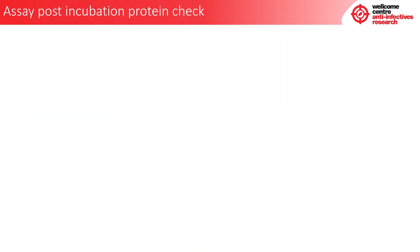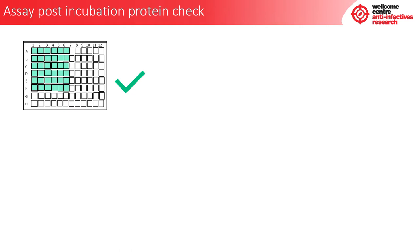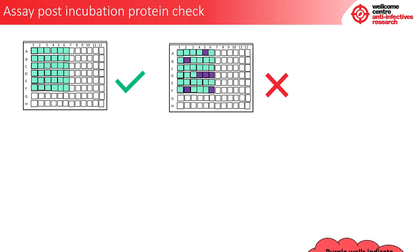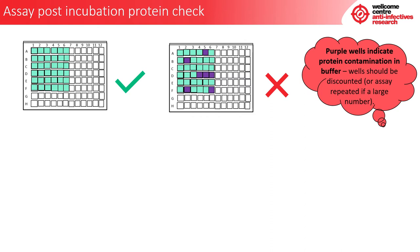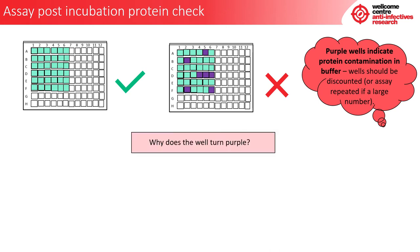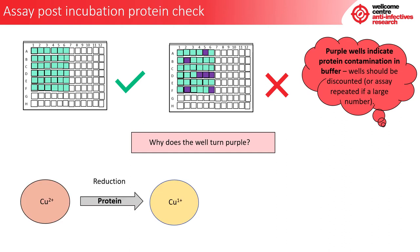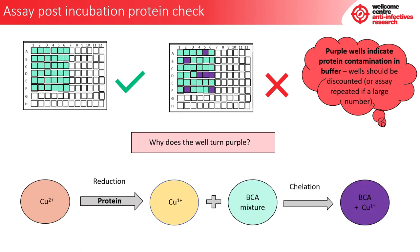After 15 minutes, if all wells are green then the protein check is good. However, if there are purple wells, this can indicate protein contamination in the buffer. These wells should be discounted, or the assay repeated if there are a large number of purple wells. The copper ion is reduced in the presence of protein to the cuprous cation, which when mixed with the BCA mixture undergoes chelation resulting in a purple colour. Therefore, the more protein present, the darker the purple colour. This can also be quantified using the quantitative protein check.